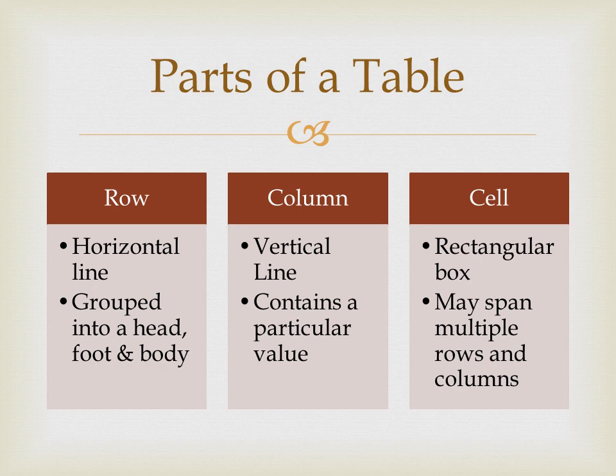Now let's learn the parts of a table — how to insert a table in HTML. There are three parts of a table: one is row, another one is column, and another one is cell. A row is a horizontal line which is grouped into head, foot, and body — that is header, footer, and body. A column is a vertical line which contains a particular value.